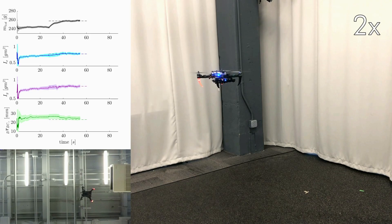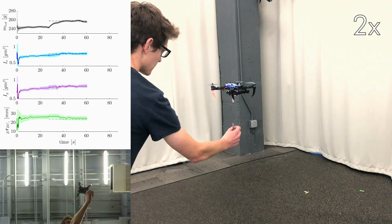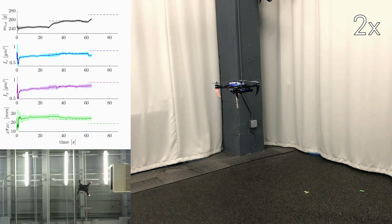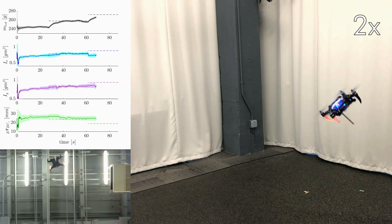Next, we increase the Z offset of an additional weight to show the capability of estimating bigger changes in the inertia parameters.